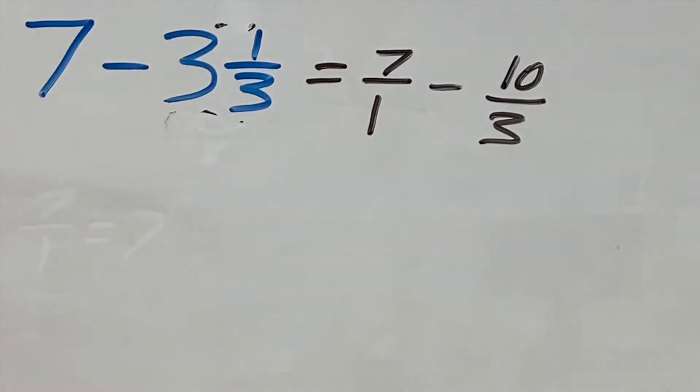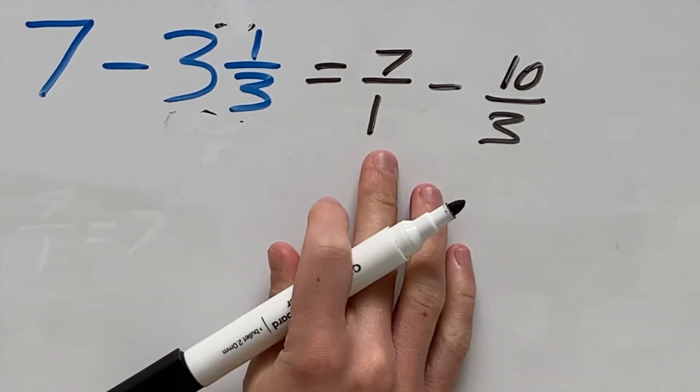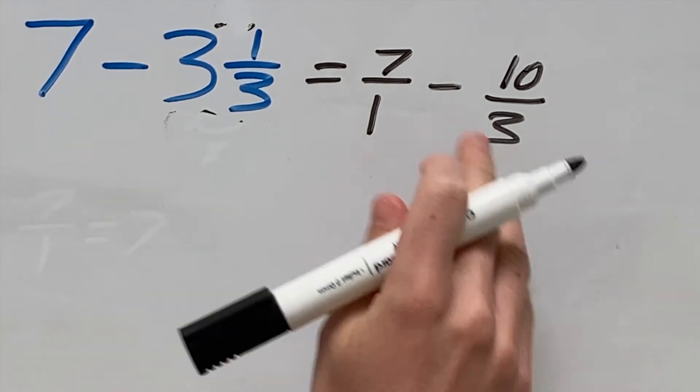The first thing we need to do is get a common denominator. More specifically, we need to get the least common denominator. The least common denominator of 1 and 3 is 3.